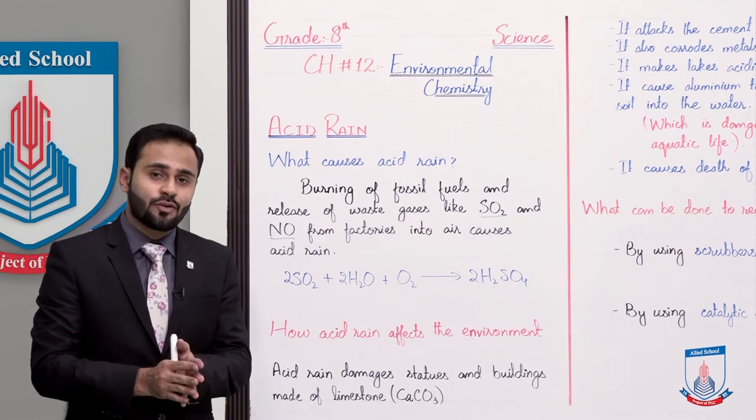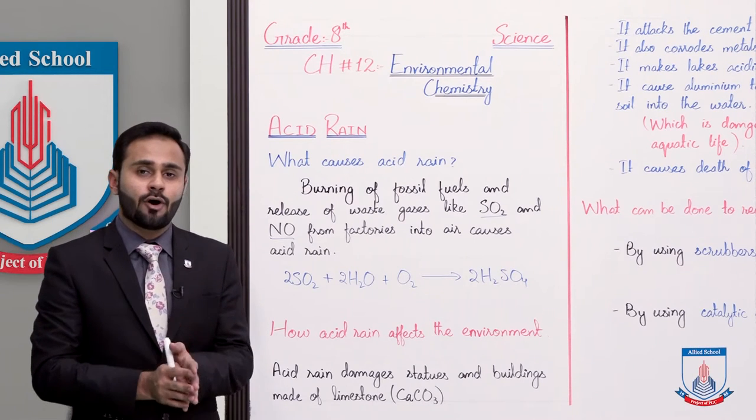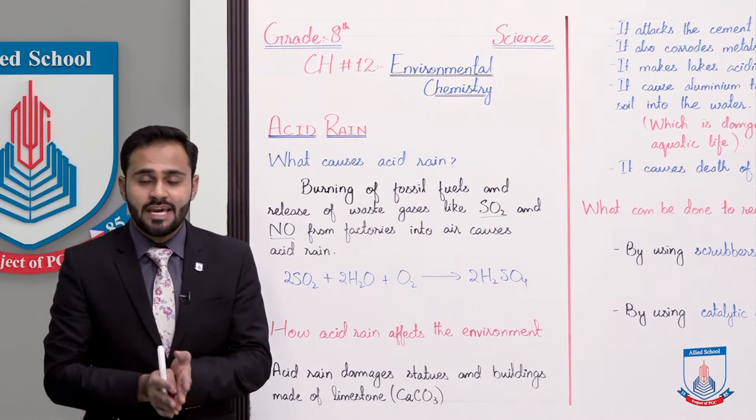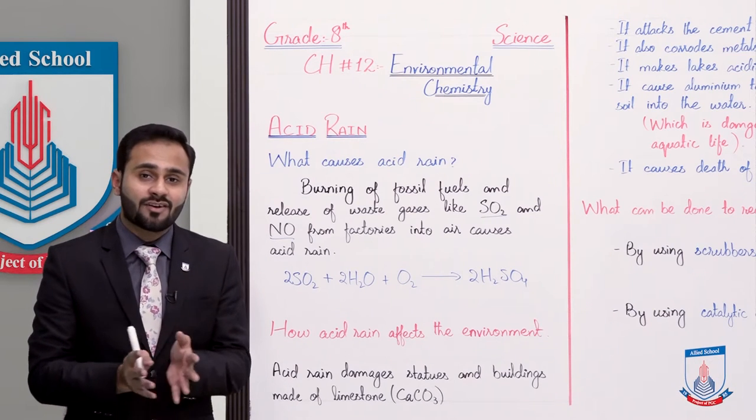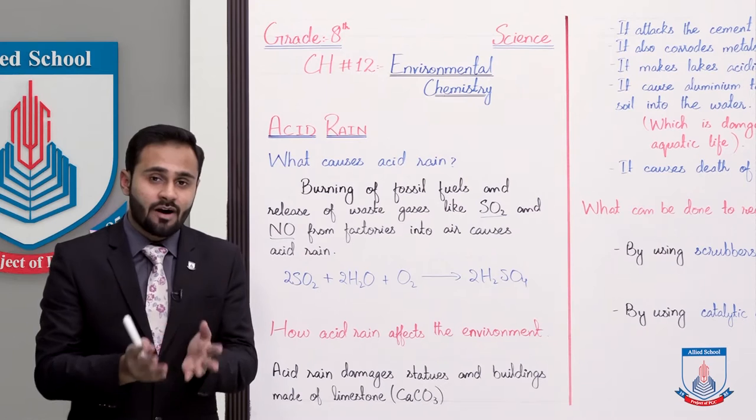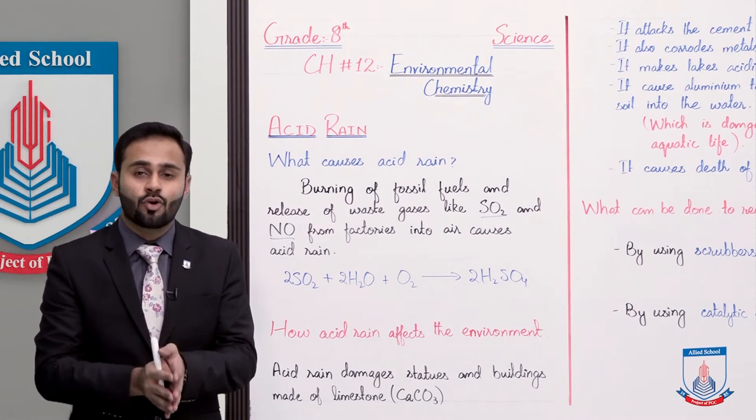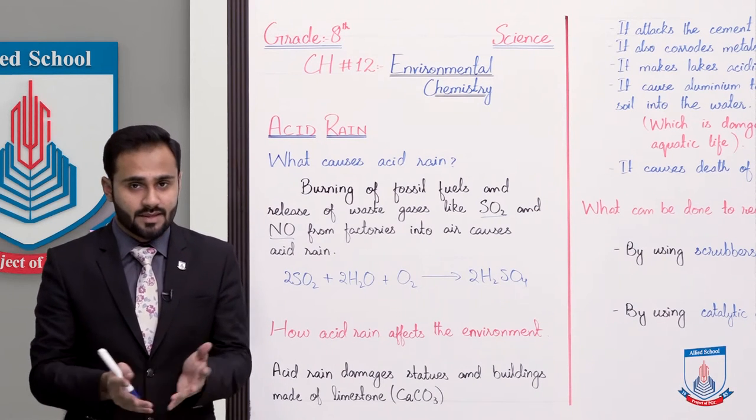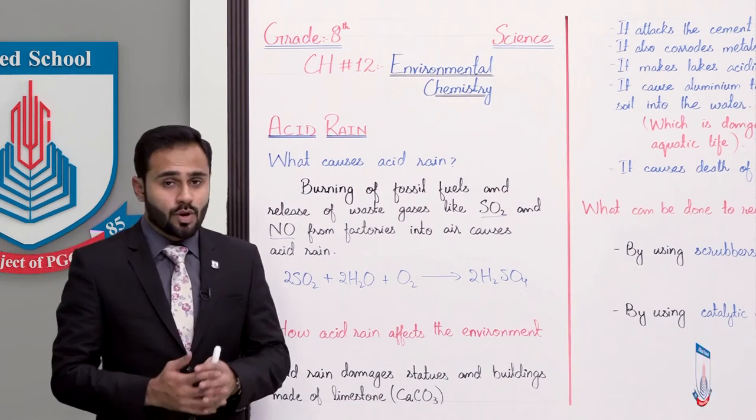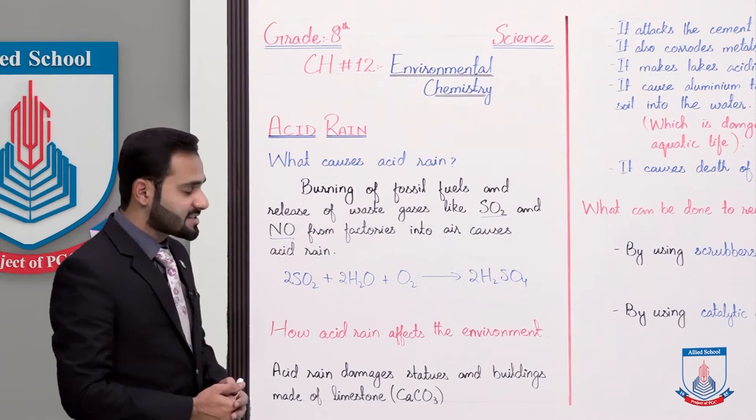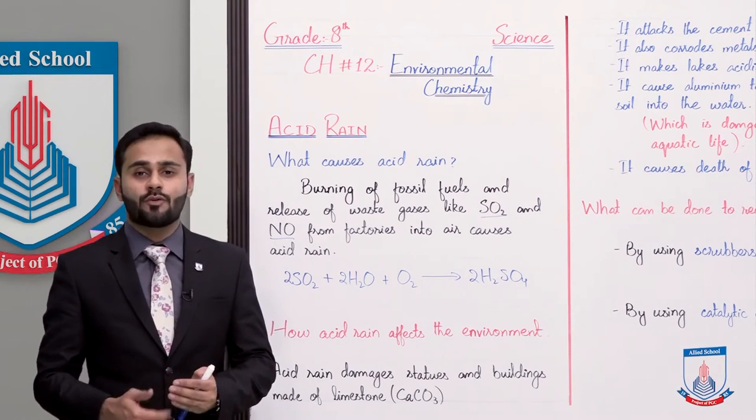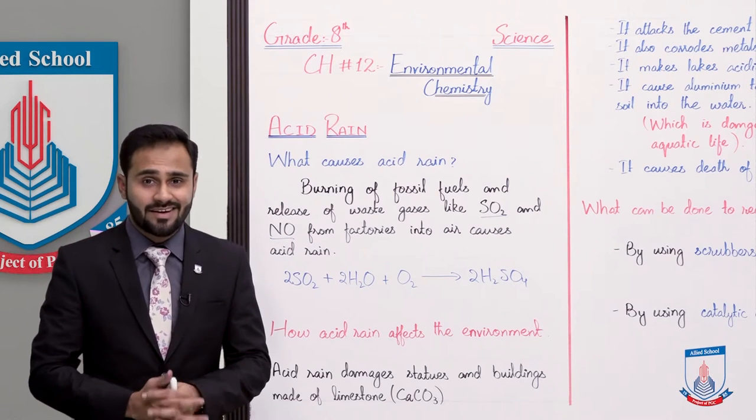Okay, now this sulphuric acid, when it comes down in the form of rain, it causes a lot of effects on our environment, it disturbs our ecosystem. How? So how does acid rain affect the environment?